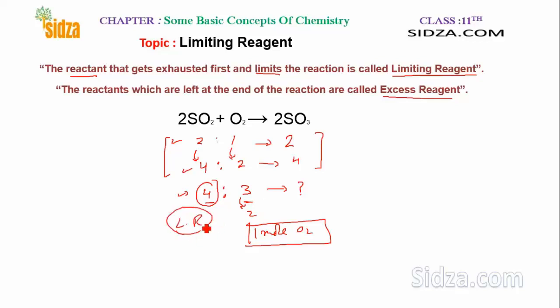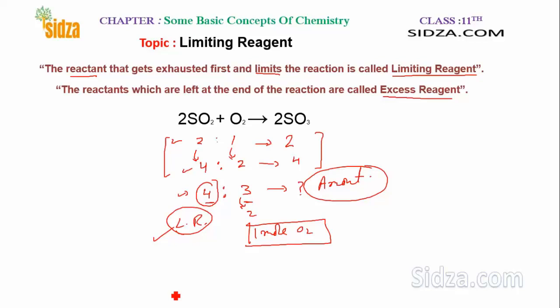To conclude: the limiting reagent is the reactant that gets exhausted first during the chemical reaction. The other reactant is the excess reagent. The amount of product you get — how many moles of SO3 — depends on the limiting reagent.